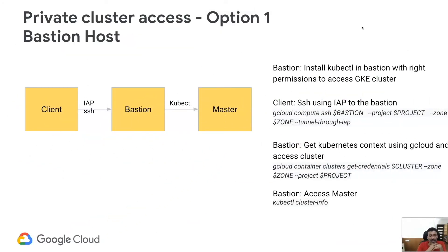Let's talk about the different ways in which we can access the Kubernetes master. The first option is through the bastion host. Here, we have a client machine, which could be present in GCP or outside GCP. There is a bastion host set up in the same VPC as your customer VPC where you created your Kubernetes cluster. The first step is to access your bastion using SSH, and we're going to use Identity-Aware Proxy for that.